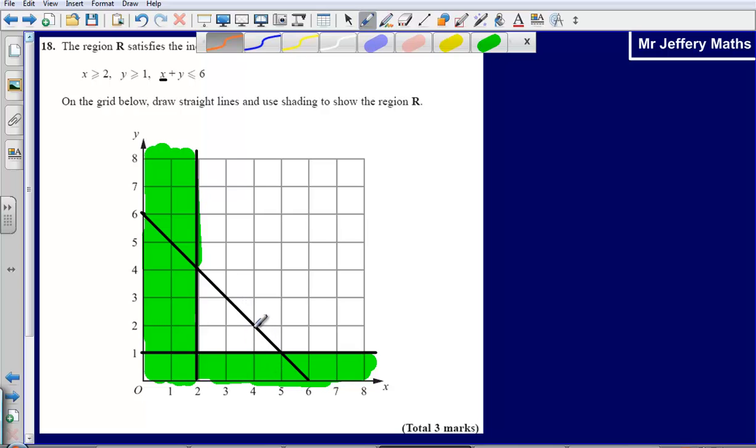So if I take this coordinate here, I see that x is 4, y is 2, 4 plus 2 gives us the 6.